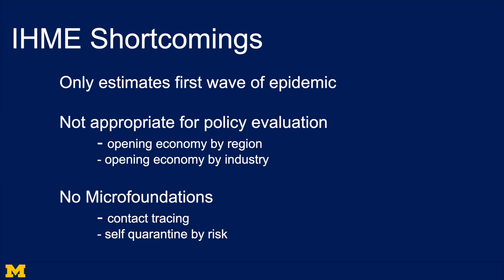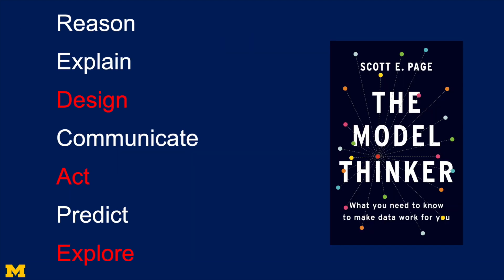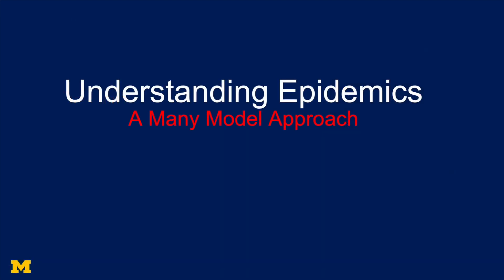Third — and this is the big one, related to the other two — because there's no micro foundations, we can't look at what individual level actions are going to do. How well will contact tracing work? What if we can self-quarantine better by risk factors — how much will that reduce fatalities? These are key questions as we move forward from a policy standpoint, and this model isn't suited to answer them. We need models that are more computational and have micro foundations at their core. As we move ahead to design policies and take wise actions, that exploration will involve a richer set of models that make more micro level assumptions. We'll cover those next as we continue our many model approach to understanding epidemics.